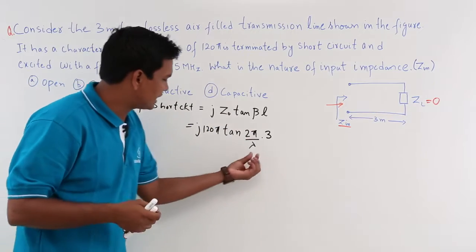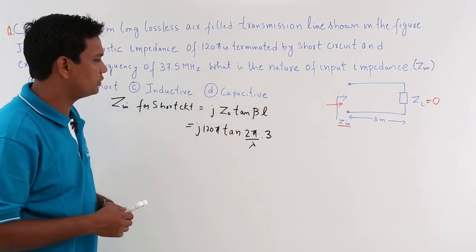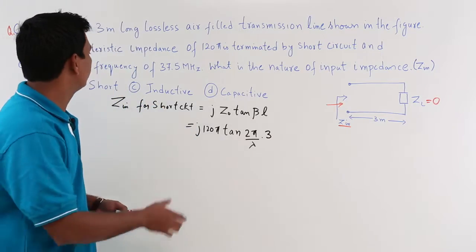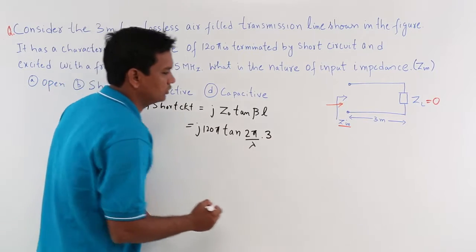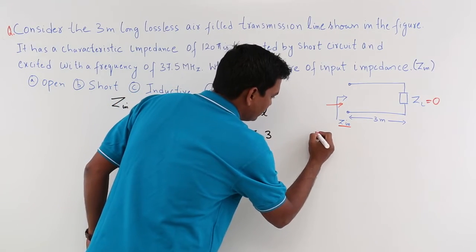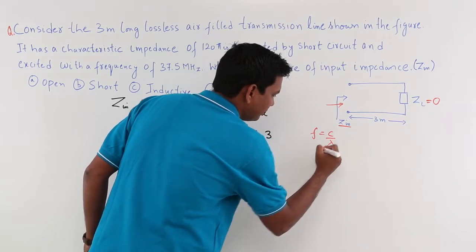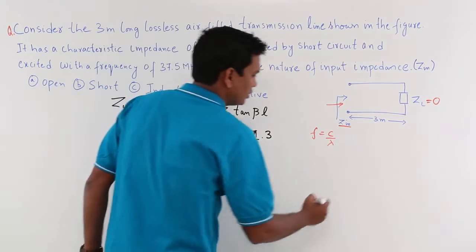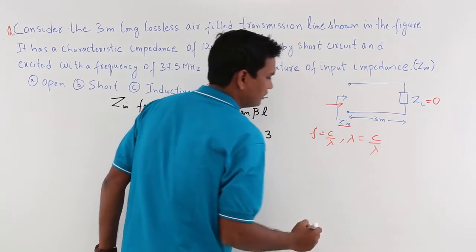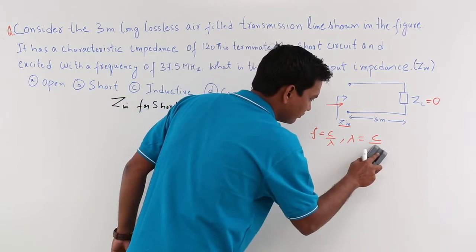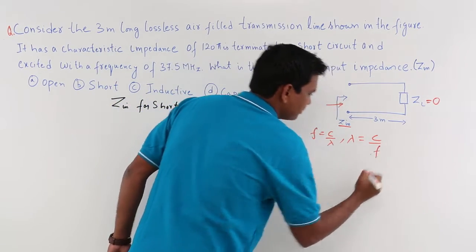Now in order to proceed, I need the lambda. I do not have lambda here. So what I am going to do is quickly find out what would be the lambda in this case, because they already gave me the frequency. What would be the lambda? We know that f = c/λ. So lambda would be c/f, which is c/f. What is c? c is 3×10⁸.